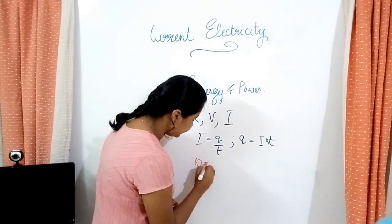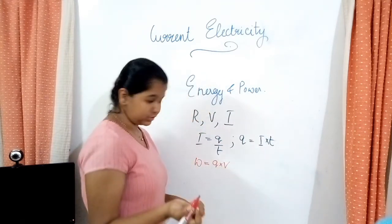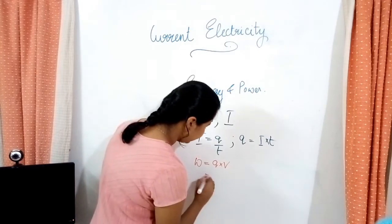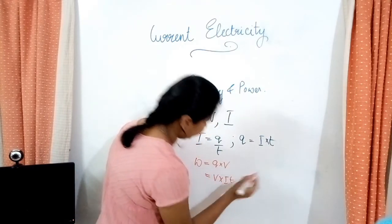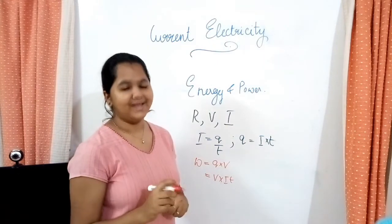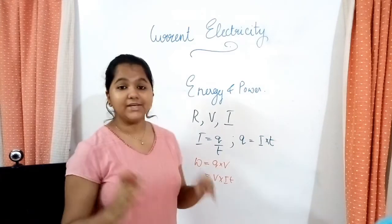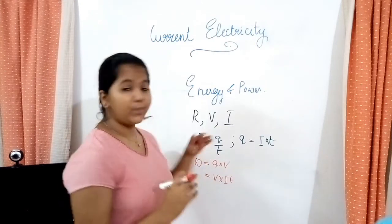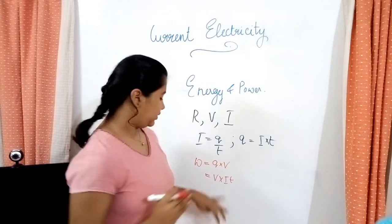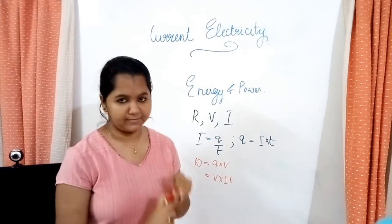Work done is equal to Q into V. Substituting Q equals IT, work done becomes V into I into T. We learned this equation in the previous part. So heat is equal to VIT. Heat is a form of energy, light is a form of energy, and so on.